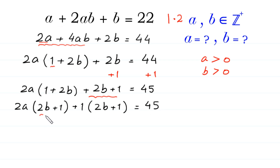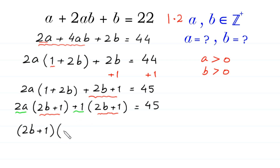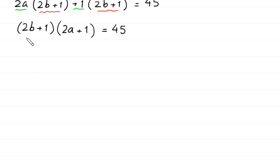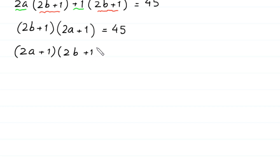As you can see, (2b + 1) is a common factor. So we factor out (2b + 1), leaving (2b + 1)(2a + 1) = 45. We can write this as (2a + 1)(2b + 1) = 45.